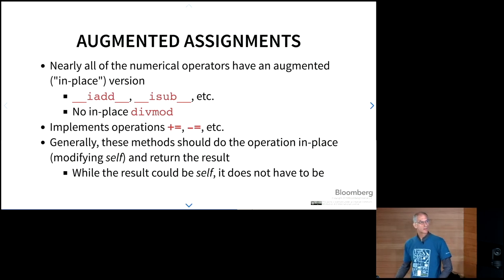There's also augmented assignments. Nearly all of the numerical operators have an augmented assignment, which is to say an in-place version, which is where the i comes in here. So we have iAdd, iSub, so on. The only one that does not have an in-place version is div mod. And these are the things that implement plus equals, minus equals, so on and so forth. Generally, these methods should do the operation in-place, which is to say modifying self and return the result. That said, while the result could be self, it doesn't necessarily have to be self.